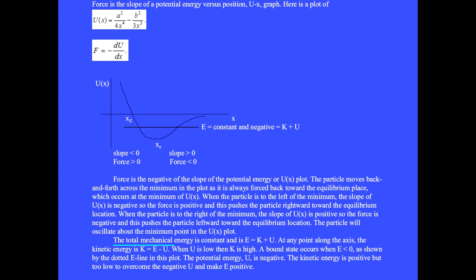The total mechanical energy is constant and is E equals K plus U. At any point along the axis, the kinetic energy is K equals E minus U. When U is low then K is high. A bound state occurs when the energy is less than zero as shown by the dotted E line in this plot. The potential energy U is negative. The kinetic energy is positive but too low to overcome the negative U and make E positive.